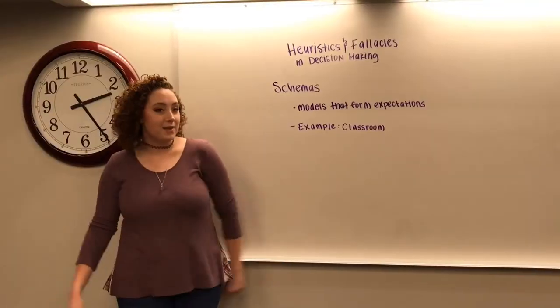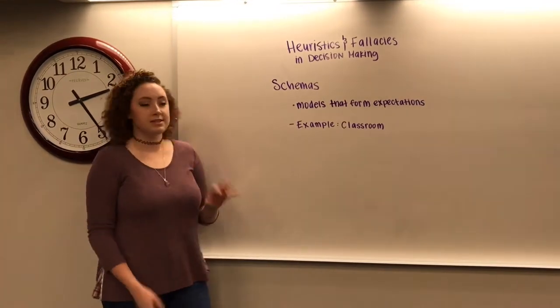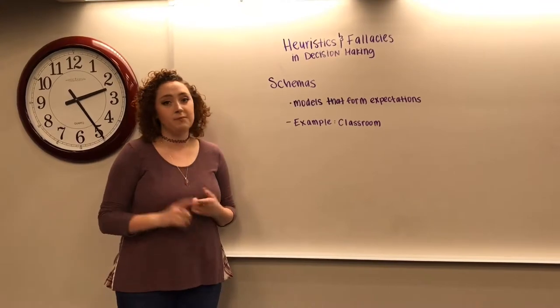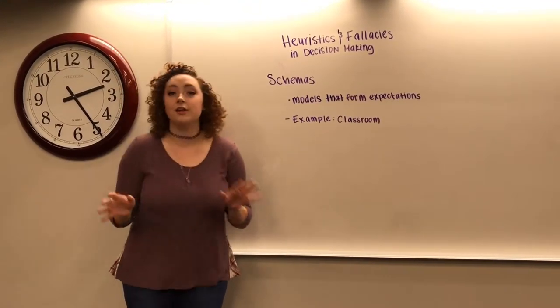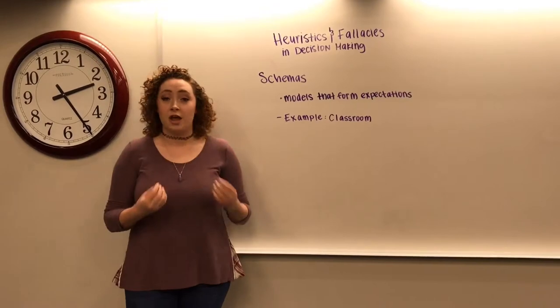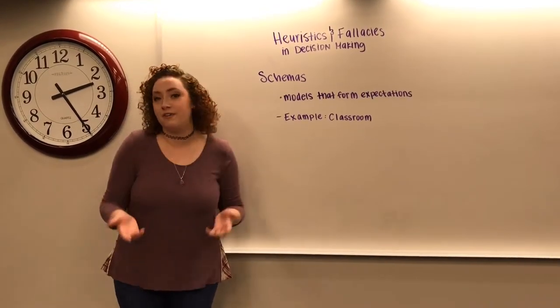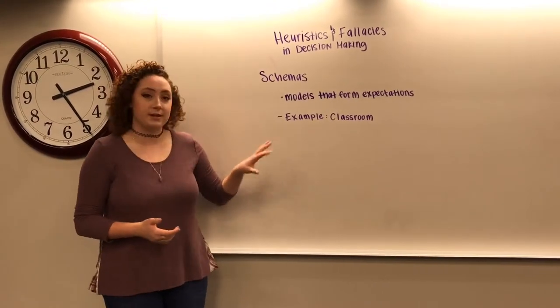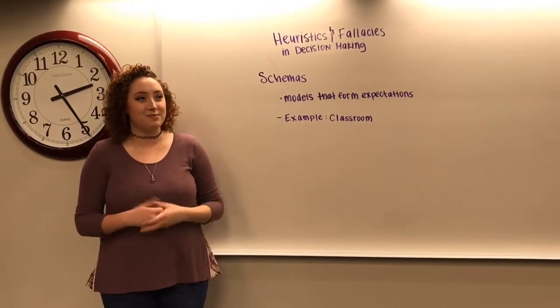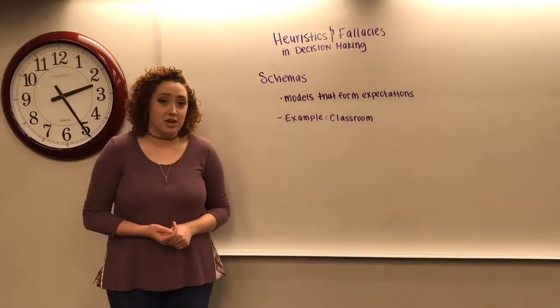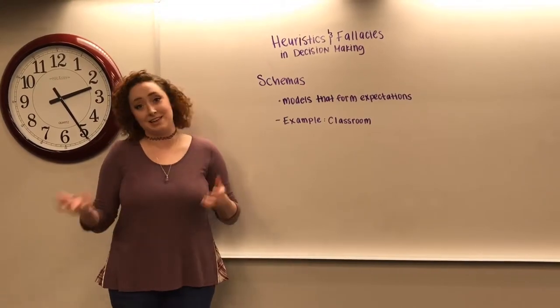We also saw that Lauren dismissed Brittany's remark, which rejected her confirmation bias. Up next, we're going to start talking about schemas. What schemas are are models that help to shape our expectations of the world, including people, places, and things. A good example of this is a schema of the classroom. If you walk into a classroom and see things like books, pencils, and students, those would all be consistent with your expectations. But if something like a lion were to suddenly walk in, that would be very inconsistent with your expectation of what it means to be sitting in class.